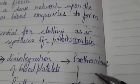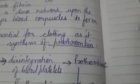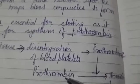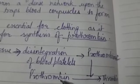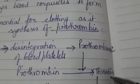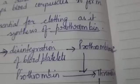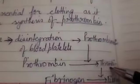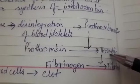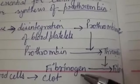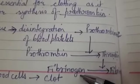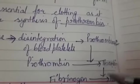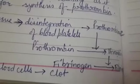Prothrombinase functions as an enzyme and converts the inactive pro-thrombin into active thrombin. The thrombin then functions as an enzyme acting on inactive fibrinogen, which is present in the blood plasma. In the presence of thrombin, fibrinogen converts itself into the form of fibrins.